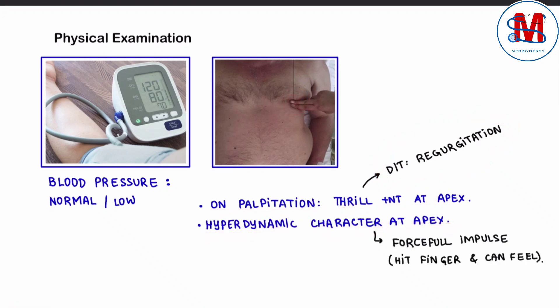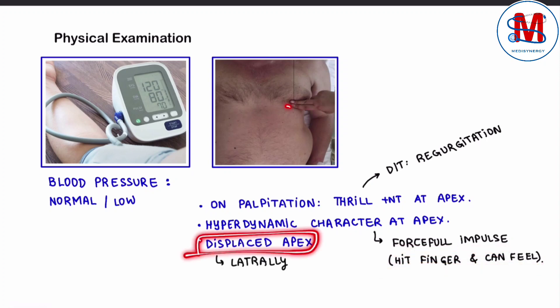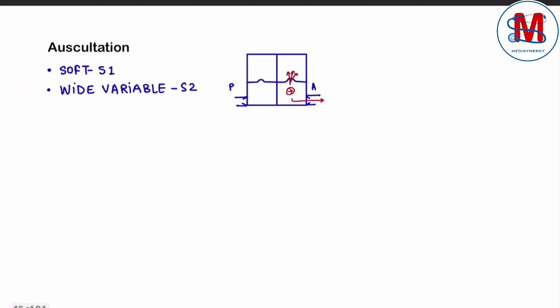Yani ki, jab finger ko apex per rakhenge, to yahan forceful impulse feel hogi. Usi ke saath, jo apex hai, woh laterally displace ho jayega. Agar auscultatory findings ki baat karein, to yahan soft S1 sunne ko milaiga, aur jo split hogi, woh hogi wide variable S2.